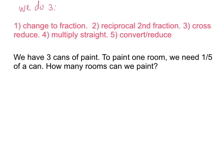Okay, and this is we do number three. It's the last we do, and then you only have one you do after this. We don't need to copy this down because it should be at the top of your page. We do need you to copy this down. We have three cans of paint. To paint one room, we need 1/5 of a can. How many rooms can we paint? So go ahead and copy that down, and push play when you're ready to begin.